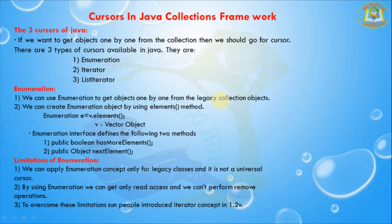In the Collection Framework there are three cursors available: Enumeration, Iterator, and ListIterator. These are the three cursors available in the Collection Framework, and these are all interfaces. Enumeration is a legacy cursor introduced in version 1.0. Iterator and ListIterator are the latest cursors. To get objects one by one from collections, we should use the cursors.